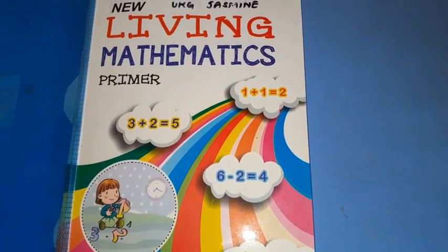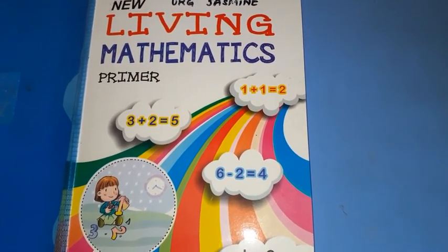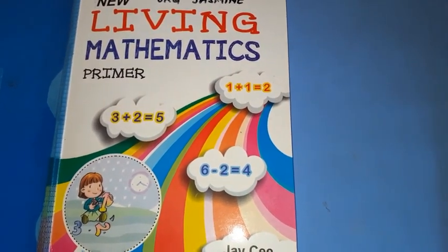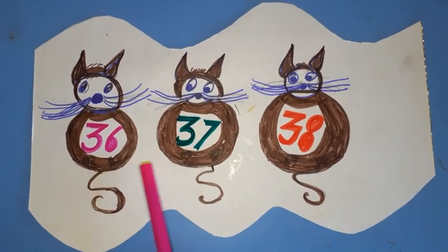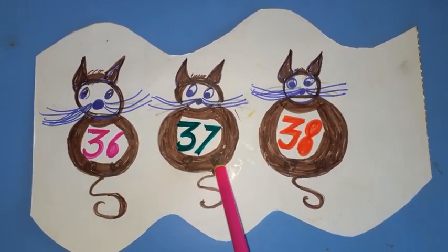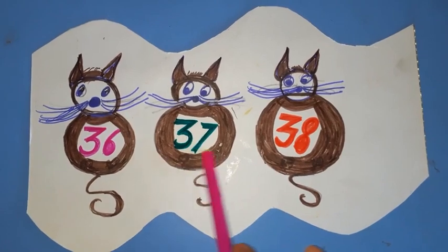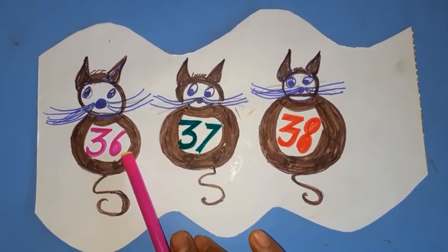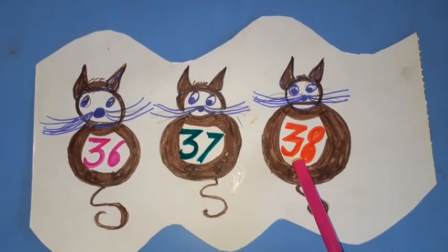First of all, I will explain you what is before, after and between. So, let's see this picture. There are 3 cats standing in a queue. The cats are numbered 36, 37 and 38.